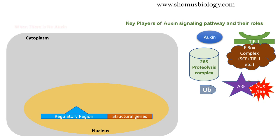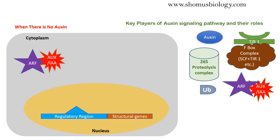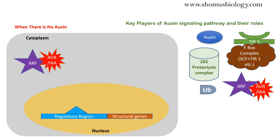When there is no auxin in the environment — when the plant does not receive auxin — the ARF is inhibited by the AUX/IAA inhibitor. At this point, since ARF is inhibited, there is no one to bind to the regulatory region, and thus no structural gene transcription is possible.